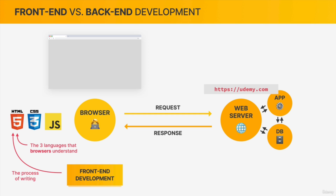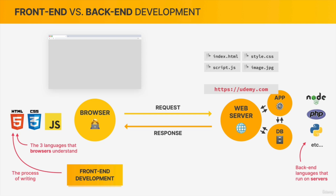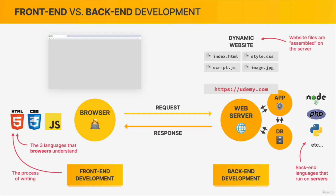Front end technologies like HTML and CSS are simply not enough to build something like udemy.com. To write applications actually executed on web servers, developers use some kind of back end language like Node.js, PHP, or Python. What these languages do is take data out of a database and assemble it into the final files that will then be sent to the browser as the response. This whole process is called back end development, because this is the invisible part of a website — its back end.